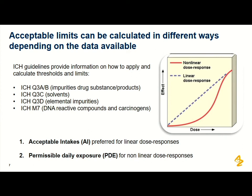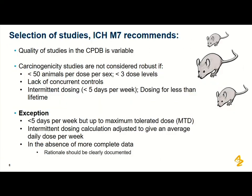Acceptable limits can be calculated in different ways, very much dependent on the carcinogenicity data available and what it tells you about the chemical's dose response. Acceptable intakes are preferred for carcinogens with a linear dose response; the permissible daily exposure (PDE) calculation is for those with a non-linear dose response where there is a threshold. The ICH Q3C and Q3D guidances for solvents and elemental impurities have a lot of additional information on calculating PDEs and the adjustment factors that should be used.